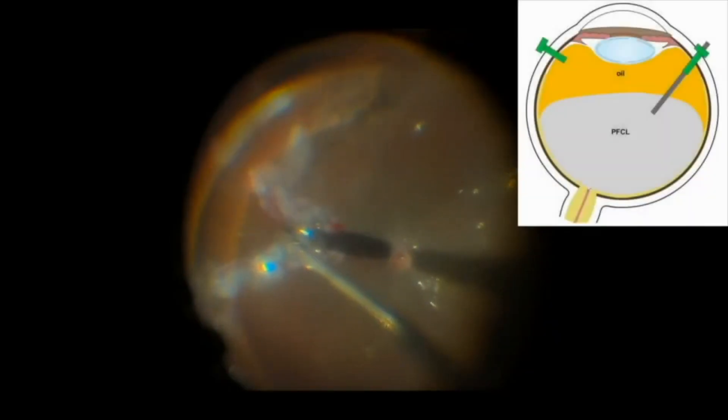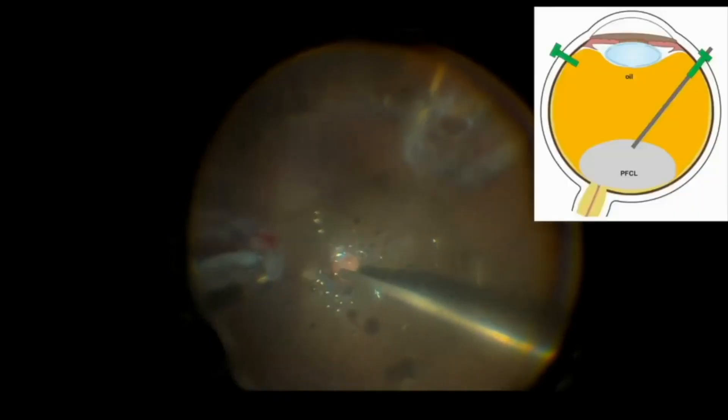After removing the BSS layer, PFCL is aspirated as the silicone oil is injected in the eye, mainly at the edge of the retinal tear. When this is achieved and the edges of the retinal tears are stuck down flat on the choroid, one follows the meniscus backward over the optic nerve to remove the rest of the peripheral carbon liquid.